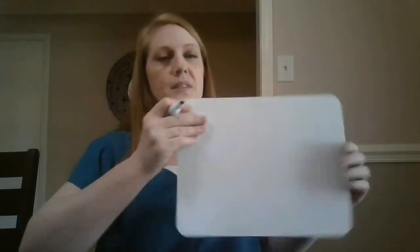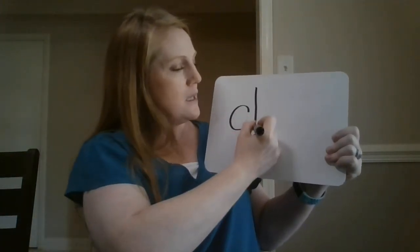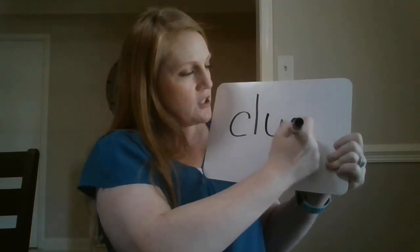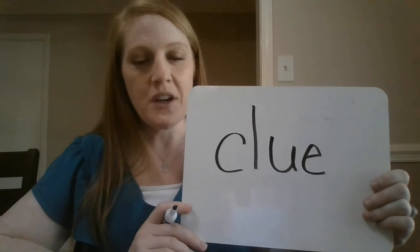Your next word is clue. We just talked about this word — a detective looks for clues. Say the word. Let's tap the sounds in clue — C-L-OO. Write the word clue, pause the video. Let's check — clue: C-L, and what spelling for OO did you use? U-E. Check your work and make sure it matches mine.